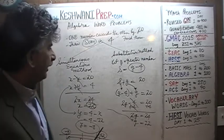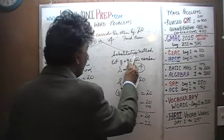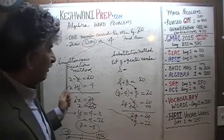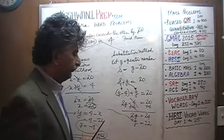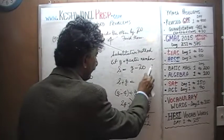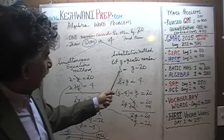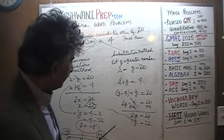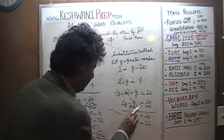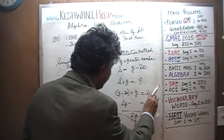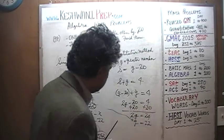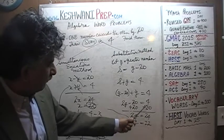Let's do the substitution method. Again, let G be the greater number. S is going to be G minus 20, since their difference is 20 and G exceeds S by 20. We know their sum has to be 4. Substituting, G minus 20 plus G equals 4, giving us 2G minus 20 equals 4. Add 20 to both sides: 2G equals 24, so G equals 12.